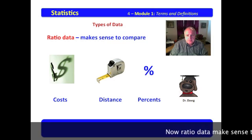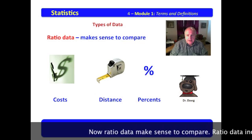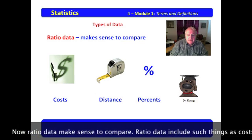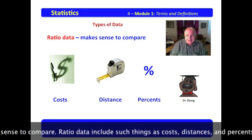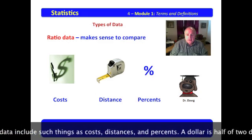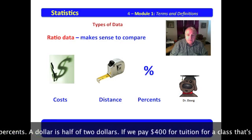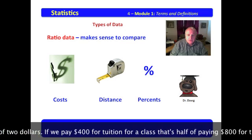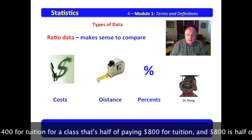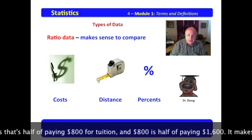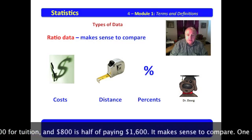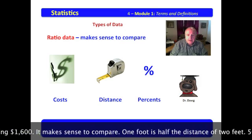Now, ratio data makes sense to compare. Ratio data includes such things as cost, distance, percent. A dollar is half of $2. If we paid $400 for tuition for a class, that's half of paying $800 for tuition. And $800 is half of paying $1,600.